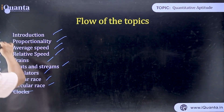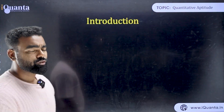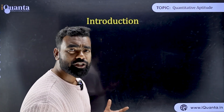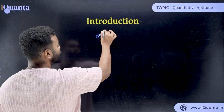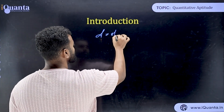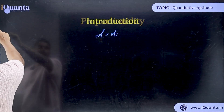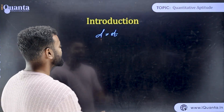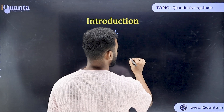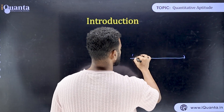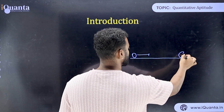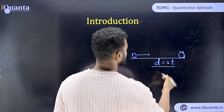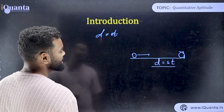In the introduction, the only formula you need is D = S×T — distance equals speed into time. Distance is the path traveled from one point to another. Speed multiplied by time gives you distance.